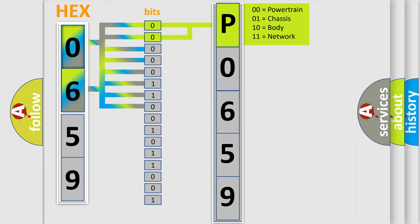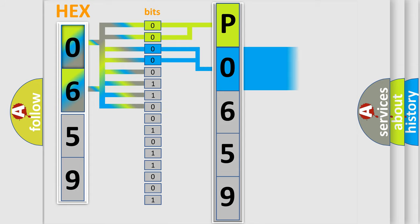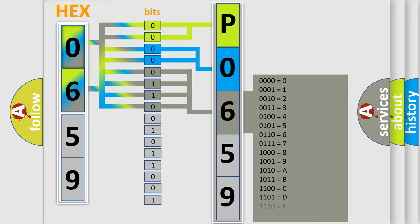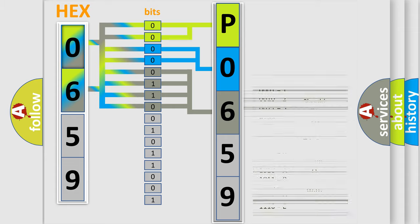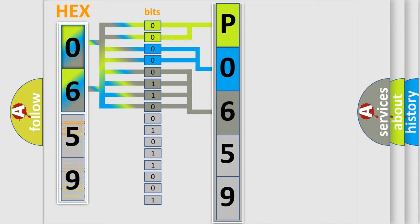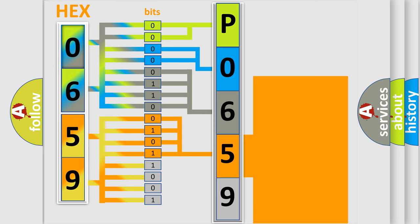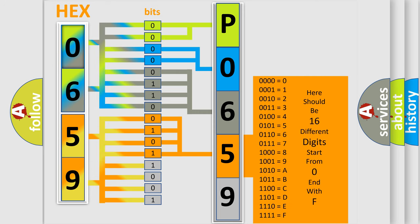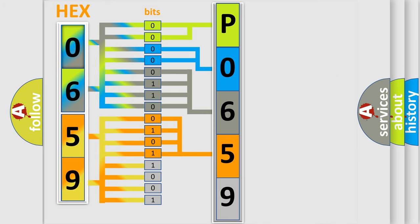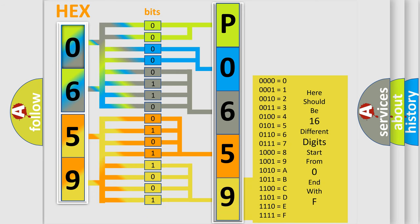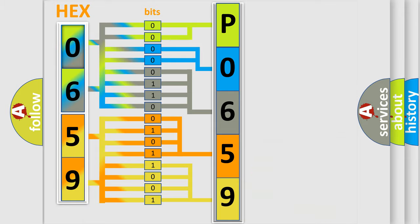The next two bits determine the second character. The last four bits of the first byte define the third character of the code. The second byte is composed of a combination of eight bits. The first four bits determine the fourth character of the code, and the combination of the last four bits defines the fifth character. A single byte conceals 256 possible combinations.